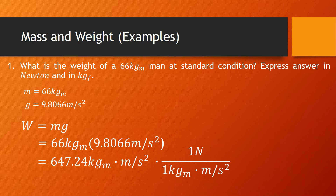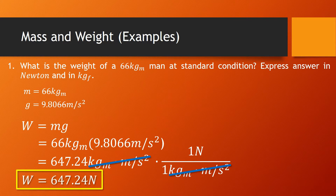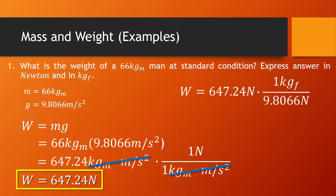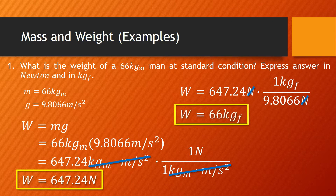We express it in newtons. Since 1 newton = 1 kg·m/s², we can cancel that out, giving us 647.24 newtons as the weight. For kilogram-force, we convert 647.24 newtons by dividing by 9.8066 N per kilogram-force, canceling out the newtons, and the answer is 66 kilogram-force.